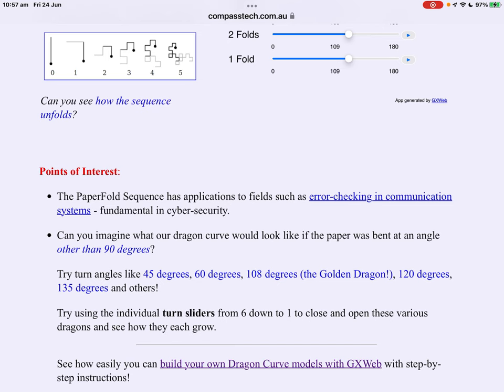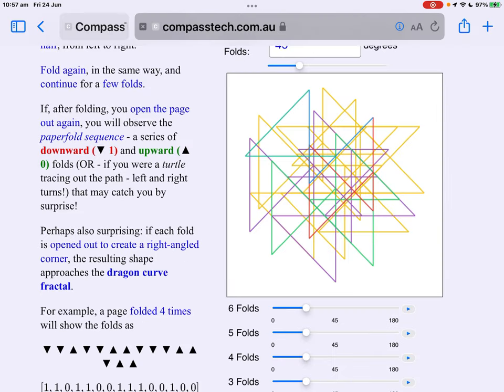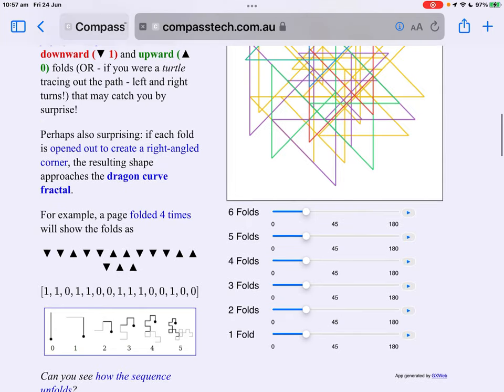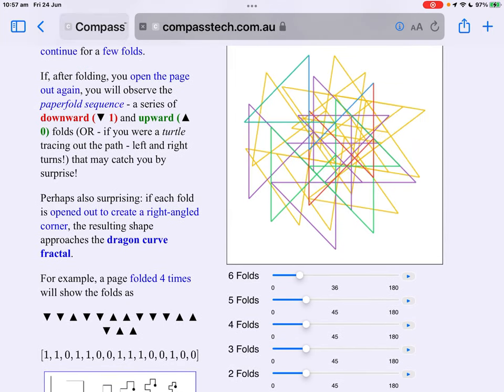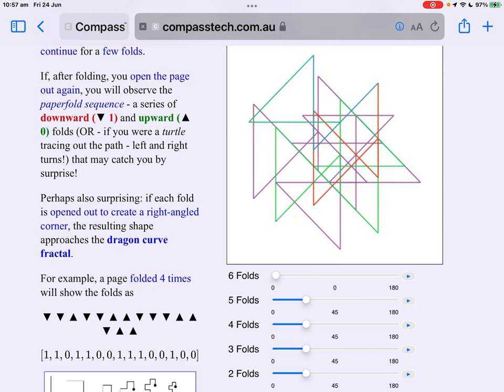Suppose we bent the folds at 45 degrees. This starts to look chaotic but is in fact quite regular. And the regularity can again be seen by reversing the folds.